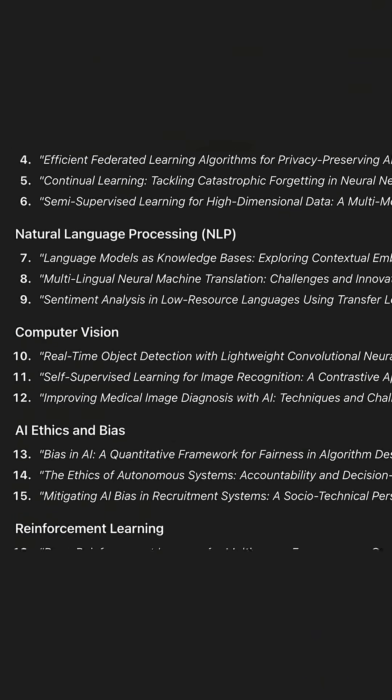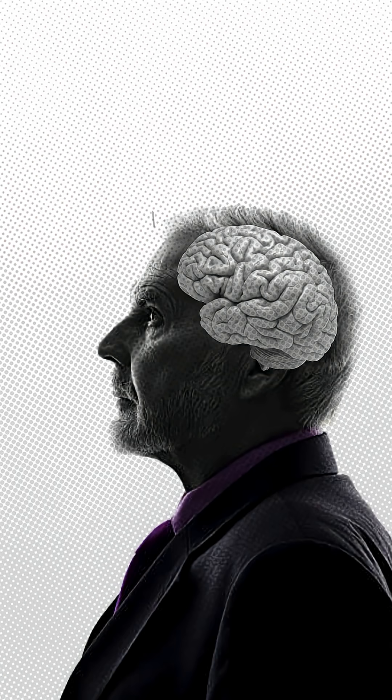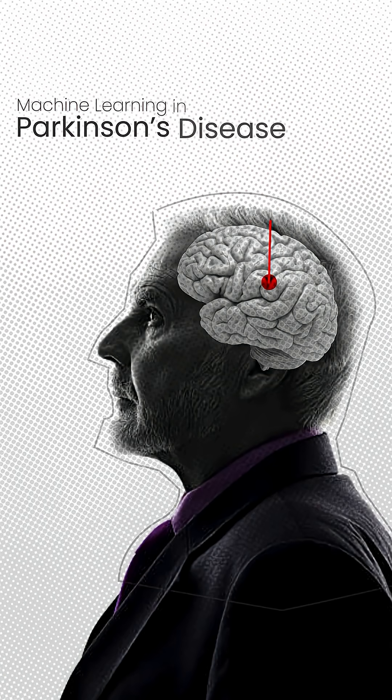ChatGPT will give you a list of almost 27 research areas and topics. You want to go ahead and decide the one that works out for you best. For instance, I like using machine learning to detect Parkinson's disease.